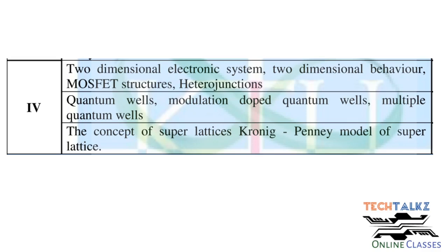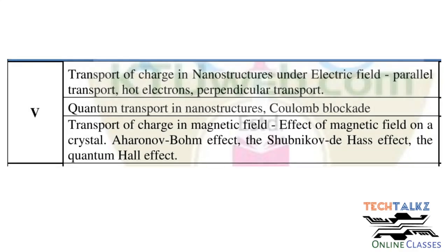In the fourth module, we will cover 2D electronic systems, MOSFET structures, heterojunctions, quantum wells, multiple quantum wells or MQW, then Kronig-Penney model. From exam point of view, this Kronig-Penney model is very important.